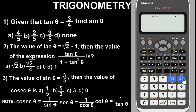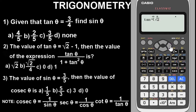Let's go to question 2. Question 2 says: the value of tan theta equals root 2 minus 1 — the value of the expression is what? As usual, we are going to store the tan inverse of this value. Press Shift and Tan — tan inverse — then enter root 2 minus 1. Press the square root key, then right arrow key, then minus 1. Close the bracket. You have to use tan inverse even though you have the value of tan. Store this as X.